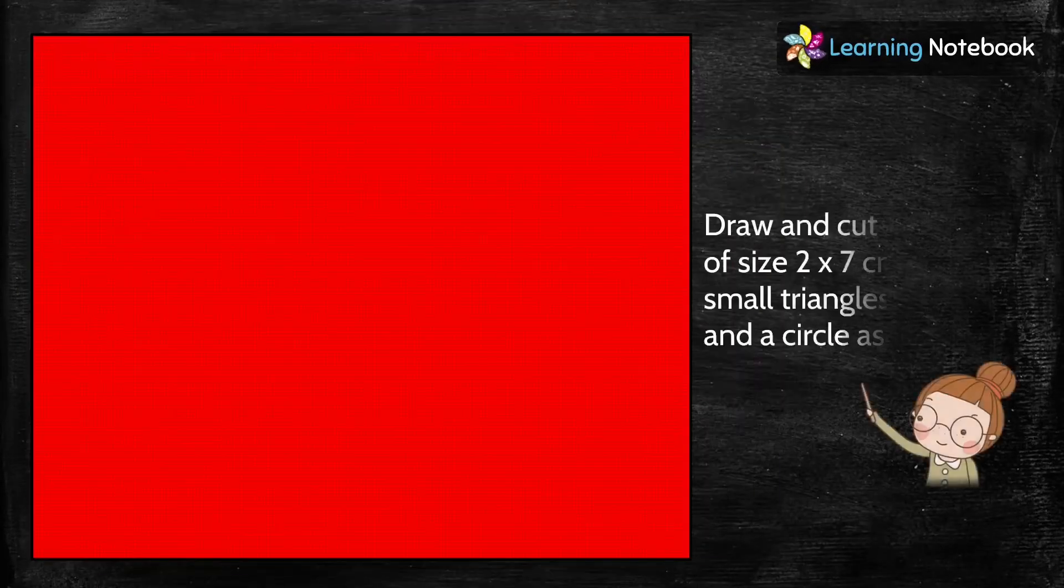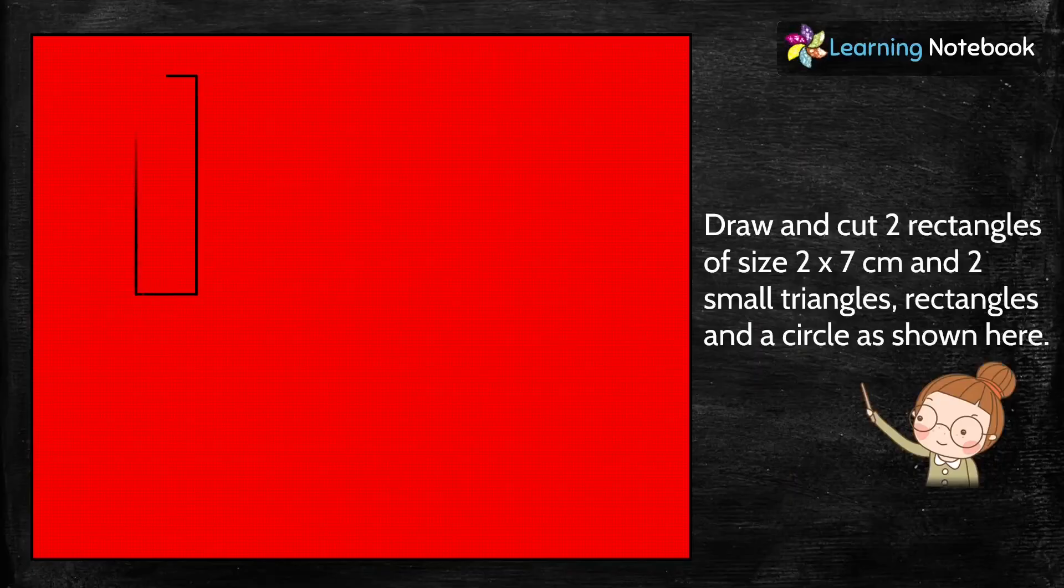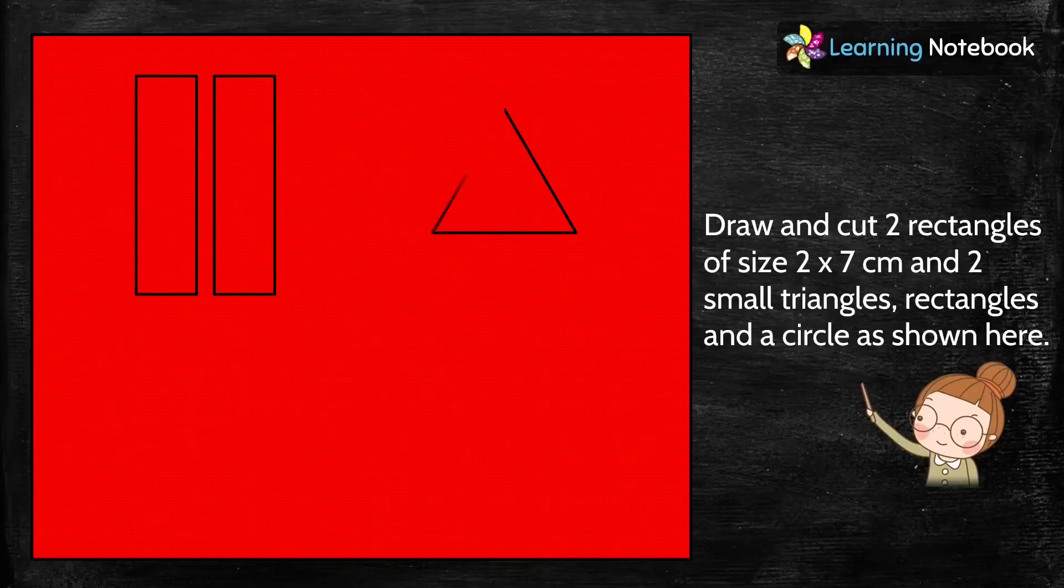Now let's take a red colored sheet. Here we need to draw and cut out two rectangles of size 2 into 7 cm.